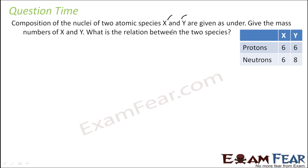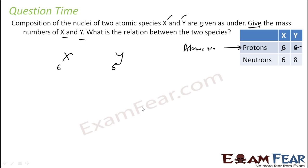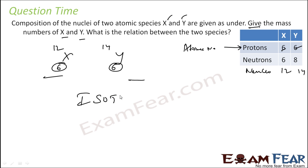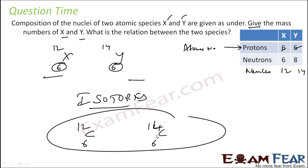The composition of nuclei of two species X and Y is given — find the mass number of X and Y and what is the relationship between them. Protons give the atomic number, so the atomic number of X is 6 and Y is also 6. Mass number = number of protons + number of neutrons. For X: 6 + 6 = 12; for Y: 8 + 6 = 14. These two have the same atomic number but different atomic masses — and thus they are isotopes. Atomic number 6 is carbon — so this is carbon-12 and carbon-14, two different isotopes of carbon.